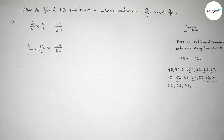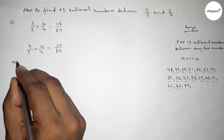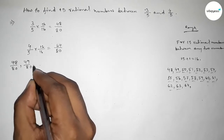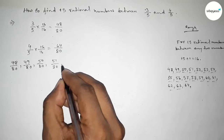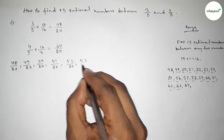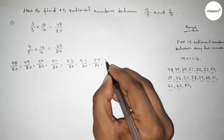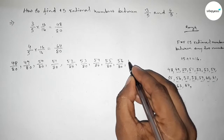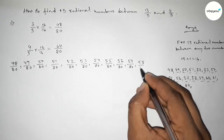These are the 15 integers between 48 and 64. Now write down all the rational numbers: 48 over 80, 49 over 80, 50 over 80, 51 over 80, 52 over 80, 53 over 80, 54 over 80, 55 over 80, 56 over 80, and so on up to 64 over 80.